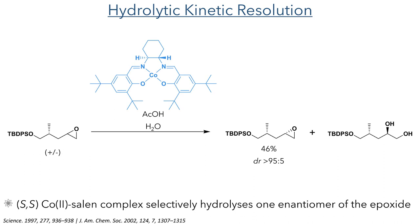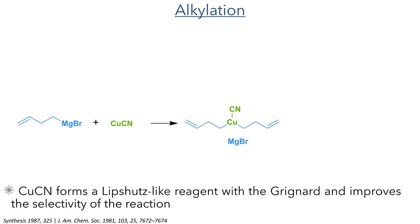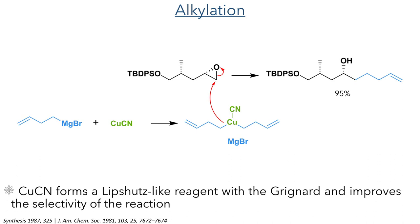The chiral cobalt-salen complex, together with acetic acid and water, selectively reacts with one enantiomer of the epoxide and produces a diol. This leaves the desired epoxide intact, and it was isolated in a 46% yield with a dr of greater than 95%. Taking this forward, the epoxide was then alkylated by first reacting a Grignard reagent with copper cyanide to form an organocuprate, similar to Gilman reagents, to improve selectivity. The nucleophile preferentially added to the less sterically hindered side of the epoxide, producing the product in a 95% yield.